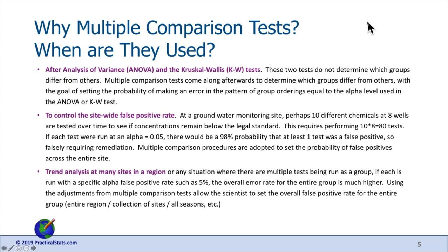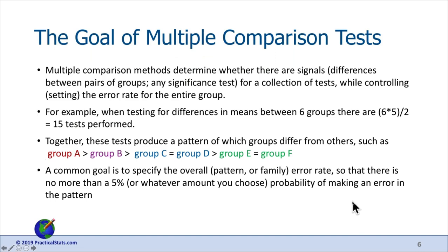The goal of multiple comparison tests is to determine whether there are signals — differences between pairs of groups, or any significance like a trend test — for a collection of tests, and to control or set the error rate for the entire group. For example, with six groups there are 15 pairwise tests. At the end, we want to know a pattern of which groups differ from others, and we want to know the error in that entire pattern we're declaring to be true.